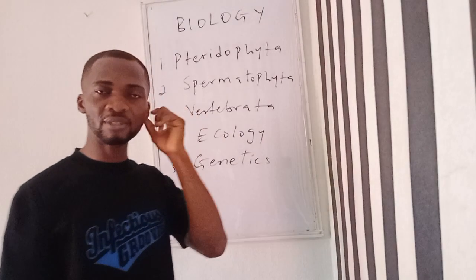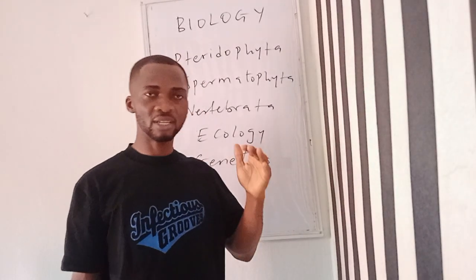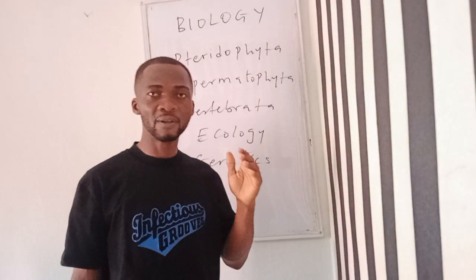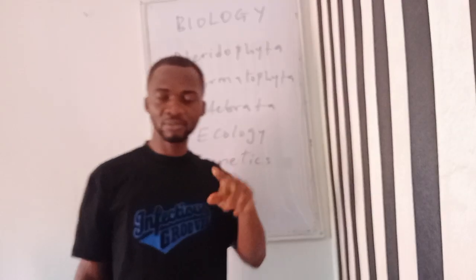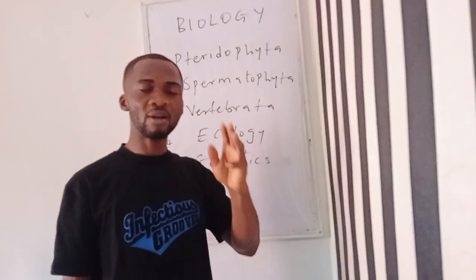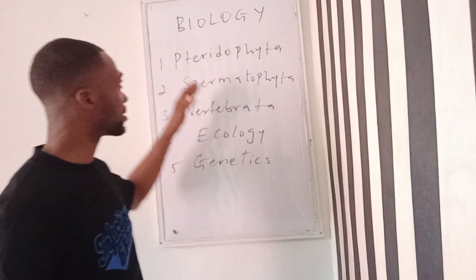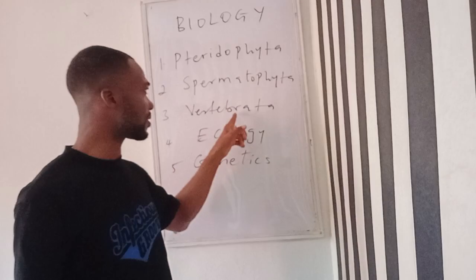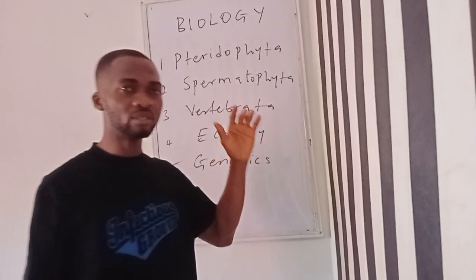We also look at Vertebrata. Under the animal kingdom we talked about protozoa, porifera, cnidaria, platyhelminthes, nematoda, annelida, mollusca, arthropoda, echinodermata, and chordata. Chordata is the phylum that links invertebrates and vertebrates. Under chordata you have cephalochordata, hemichordata, urochordata, and vertebrata. Under vertebrata there are five classes: Pisces, amphibians, reptiles, birds, and mammals.